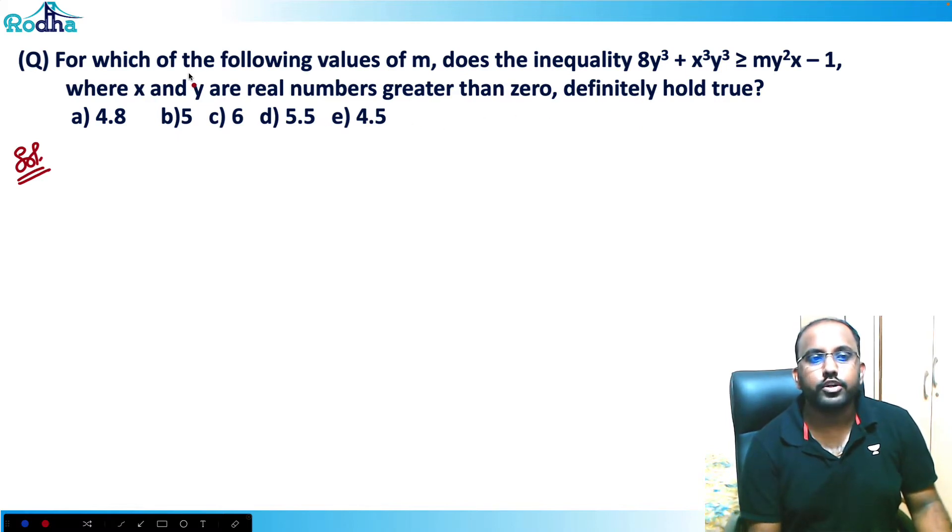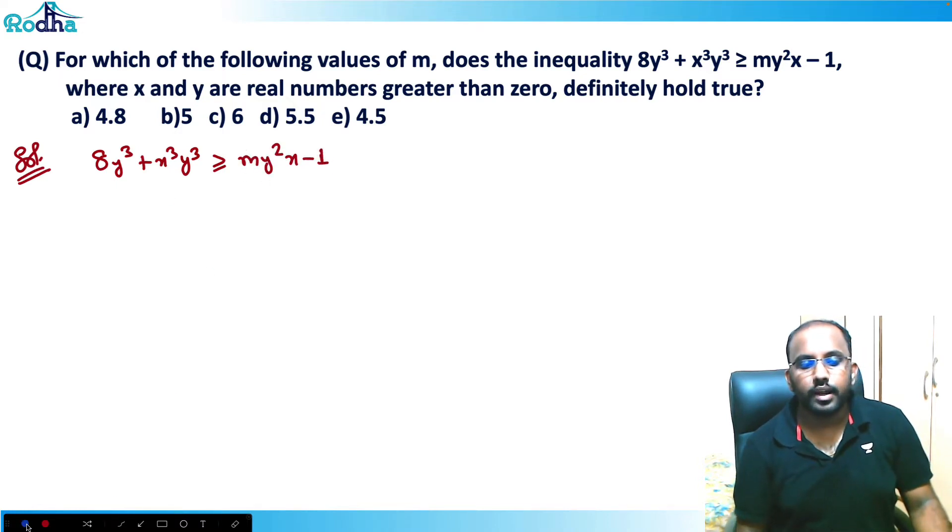This question says that for which of the following values of m does this inequality, where x and y are real numbers greater than 0, definitely hold true. So when you see these are real numbers greater than 0, that means they are positive real numbers.